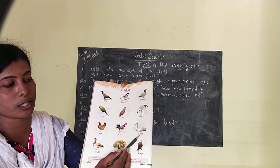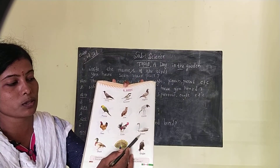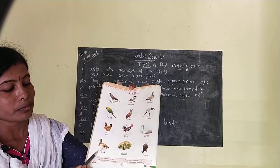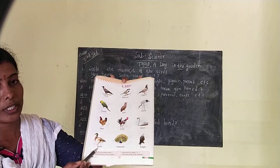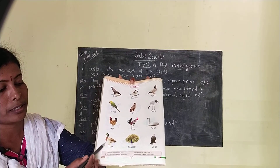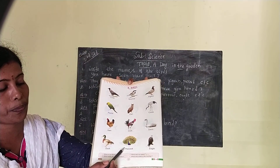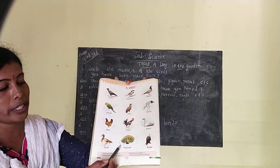Next, which bird is this? Swan — S-W-A-N, swan. Next one is duck — D-U-C-K, duck.